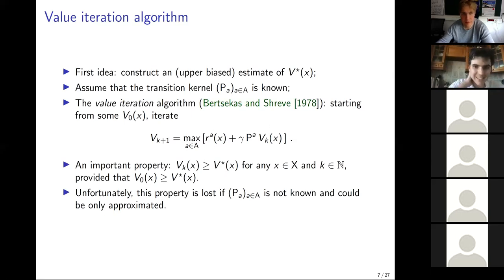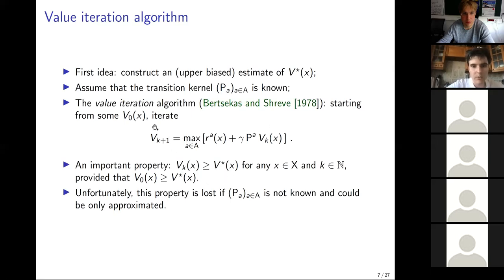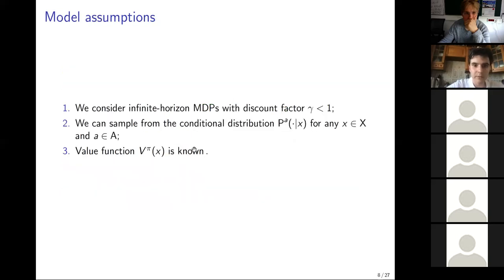Value Iteration сохраняет монотонность: если начать с верхней оценки V_0 ≥ V*, то на каждой итерации V_k тоже будет сходиться к V* сверху. Но если P_A неизвестно и мы только можем семплировать из него, то аппроксимация Value Iteration теряет свойство монотонности, и мы не знаем, будет ли наша оценка ошибки политики верхней или нижней. В своей статье мы предлагаем технику оценки Delta_P в следующих предположениях.